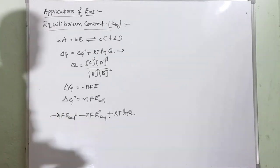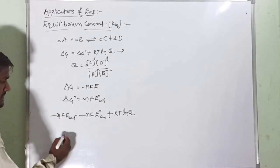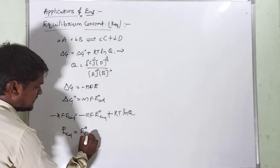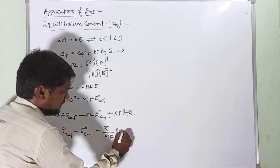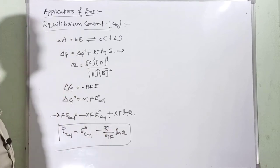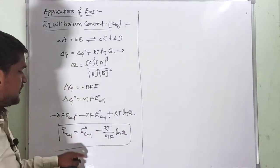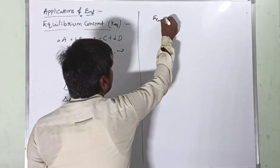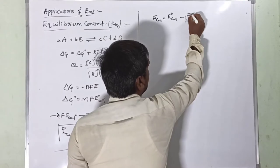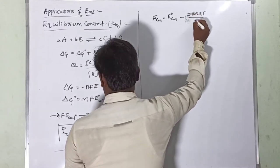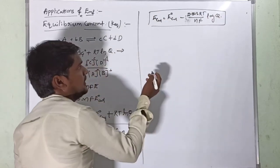Dividing the entire equation by -nF, the nF terms cancel, and we get: E_cell = E°_cell - (RT/nF)·ln(Q). Converting the natural log to log base 10: E_cell = E°_cell - (2.303RT/nF)·log(Q). This is the well-known Nernst equation.